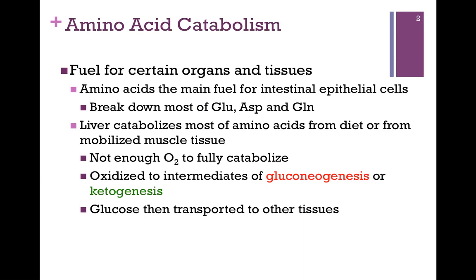There's not enough oxygen to fully catabolize these compounds, and so instead they're oxidized to intermediates of gluconeogenesis or ketogenesis. Recall that the liver is capable of carrying out both of these processes. The liver can then generate the glucose that is needed for other tissues, and it can be transported for their fuel use.